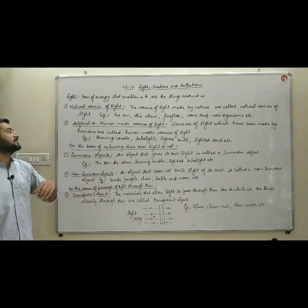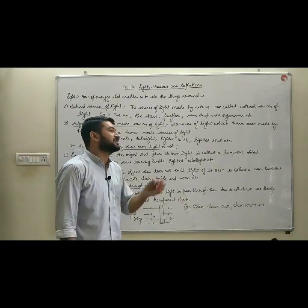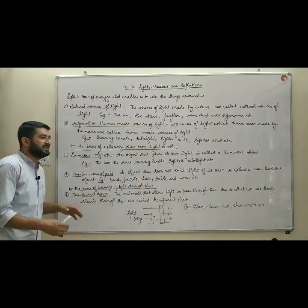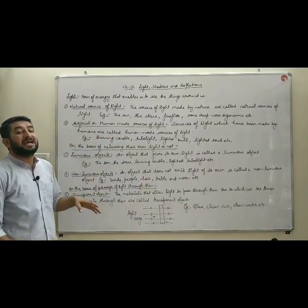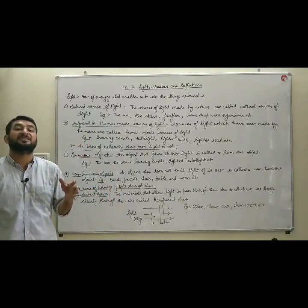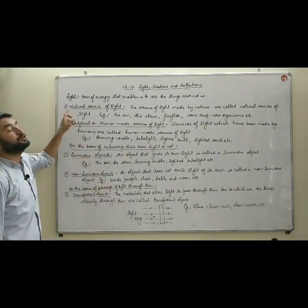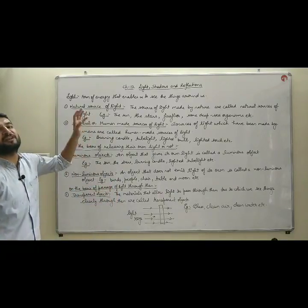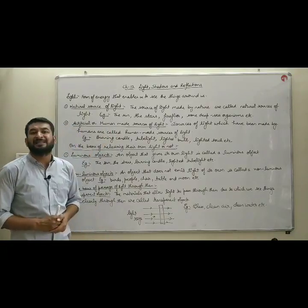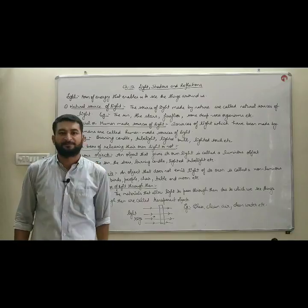For example, the stars, the sun, the fireflies, some deep sea organisms which release their own light — they are made by nature itself. These are known as natural sources of light. The other one is artificial or human-made sources of light.